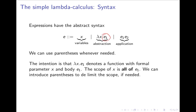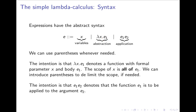We can introduce parentheses to delimit the scope if we need to. In an application, e1 e2, the function e1 is to be applied to the argument e2. So really, the lambda calculus has all we need to express computable functions. We can express functions as abstraction, and we can express function application as application. That's all we have, and that's all we need.